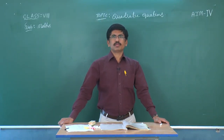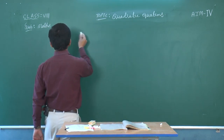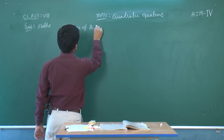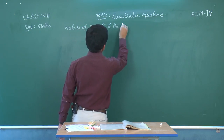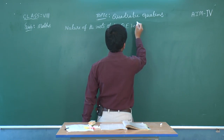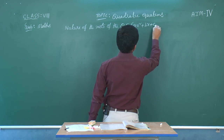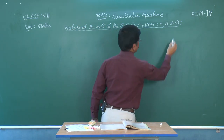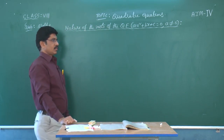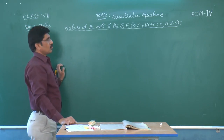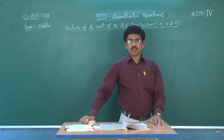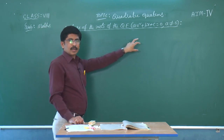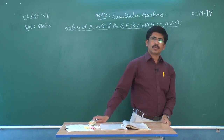In this class, I am discussing the nature of the roots of the quadratic equation. The general form is Ax squared plus Bx plus C equals 0, where A is not equal to 0. We find the nature of the roots without solving the quadratic equation. The nature of the roots depends on the discriminant, that is, delta equals B squared minus 4AC.